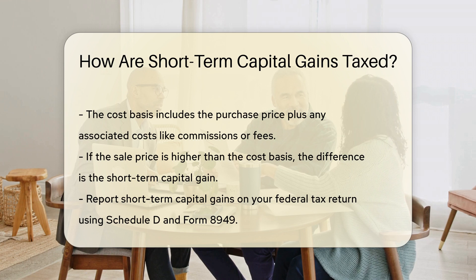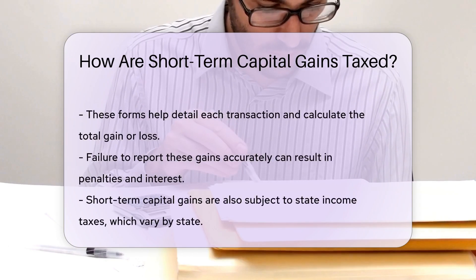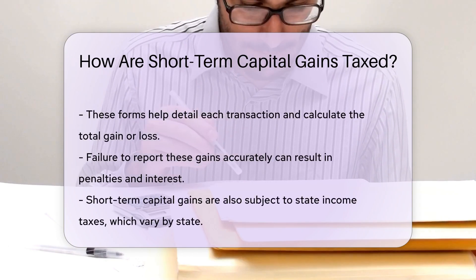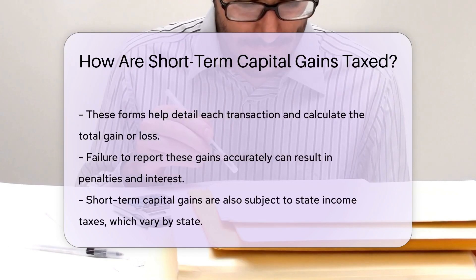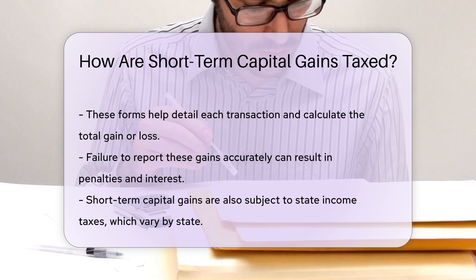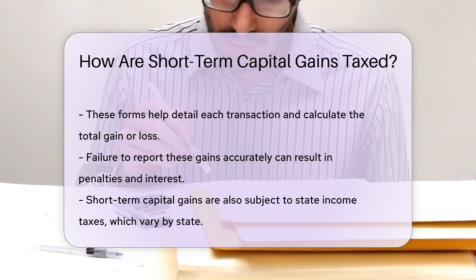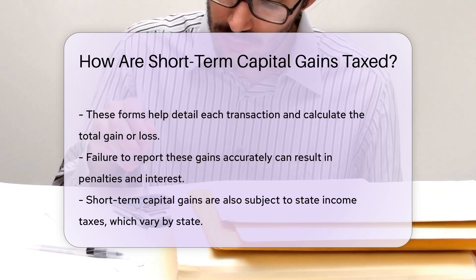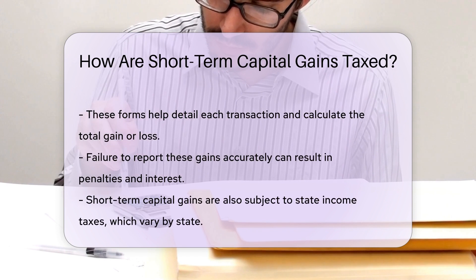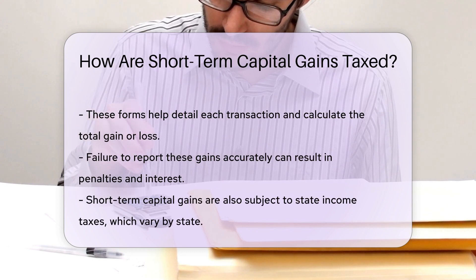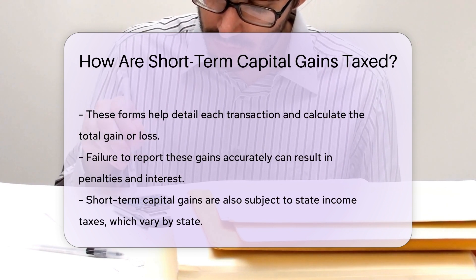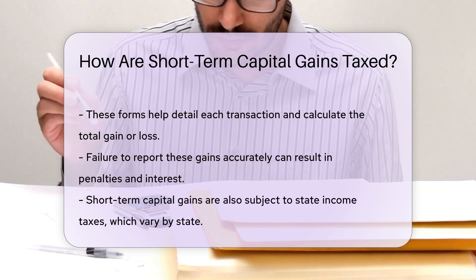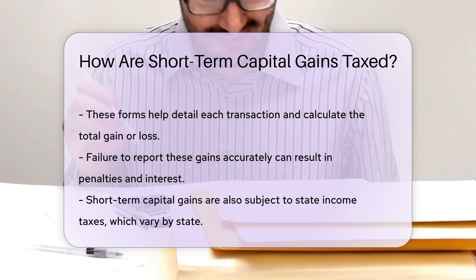It's important to report short-term capital gains on your federal tax return using Schedule D and Form 8949. These forms help you detail each transaction and calculate the total gain or loss. Failure to report these gains accurately can result in penalties and interest.